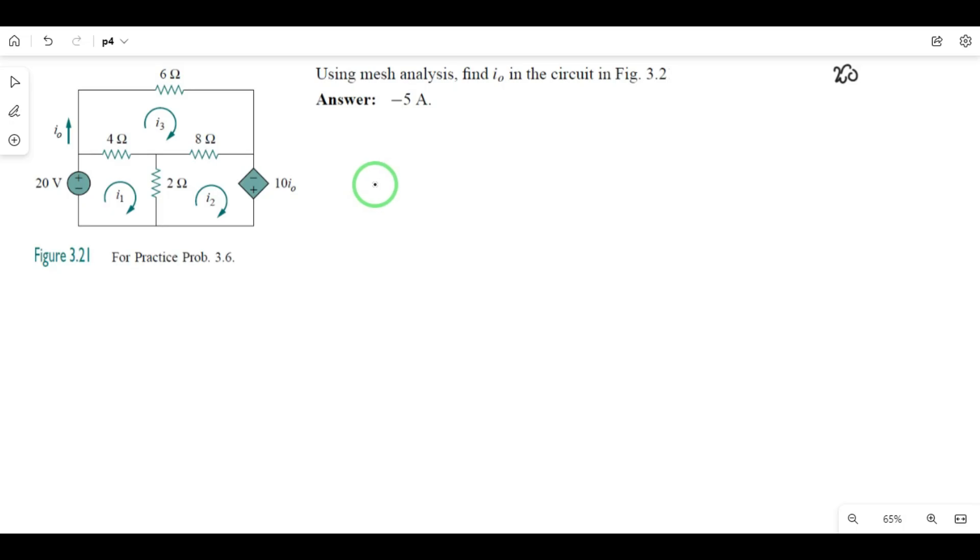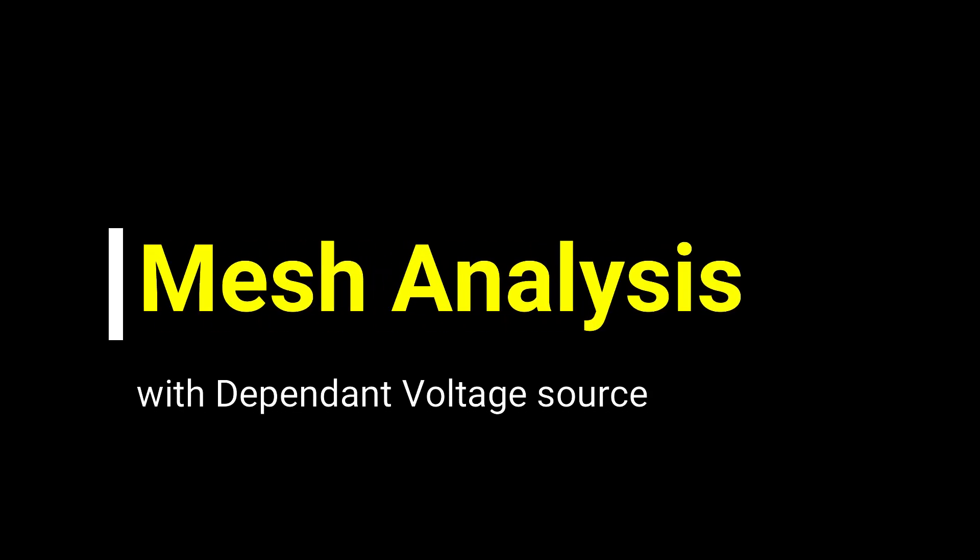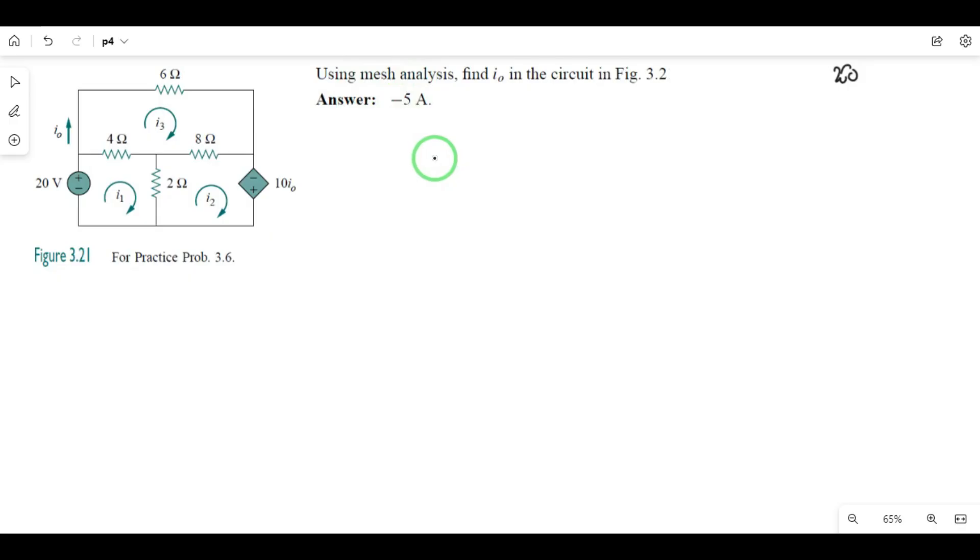Hi, in this lecture we will solve a circuit with a dependent voltage source using mesh analysis. We'll apply mesh analysis to find the mesh currents and also find the output current i naught.